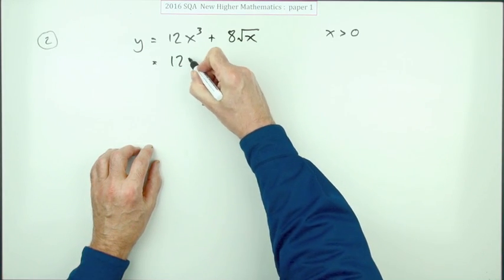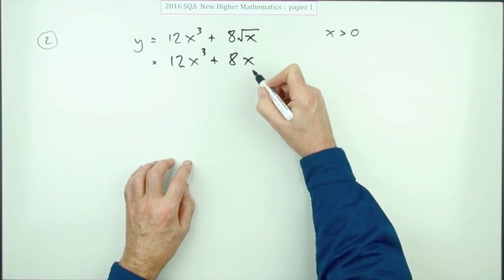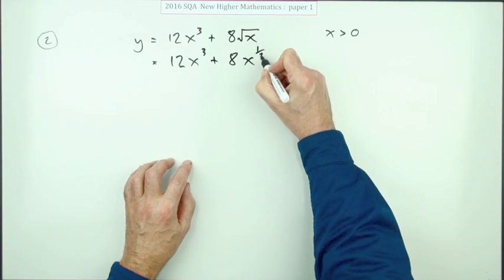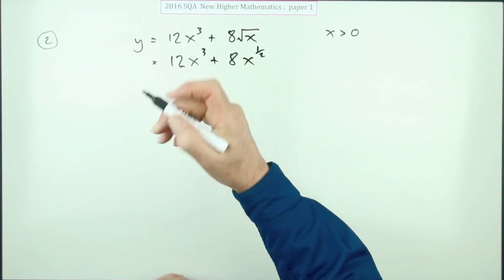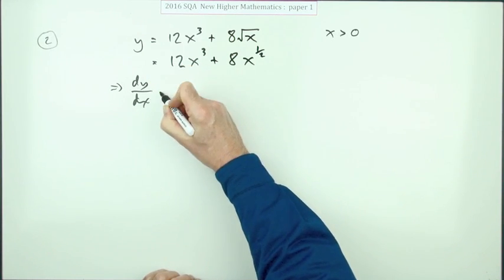As far as Higher is concerned, separate terms in index form. So I'll rewrite that root x as power a half, power one over two. Now it's ready to go, so that means I can have the derivative is equal to...